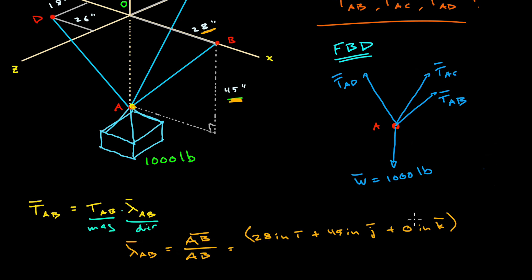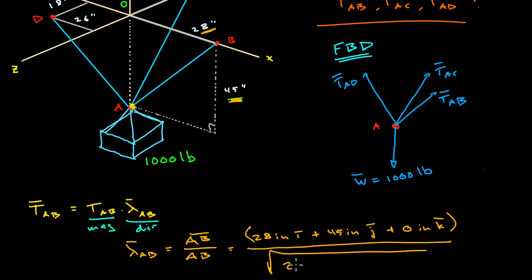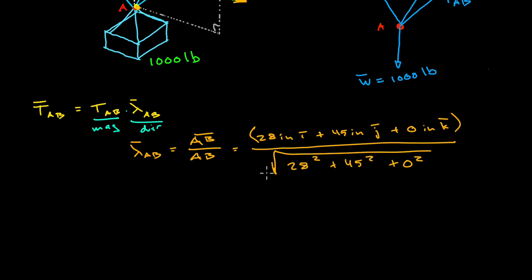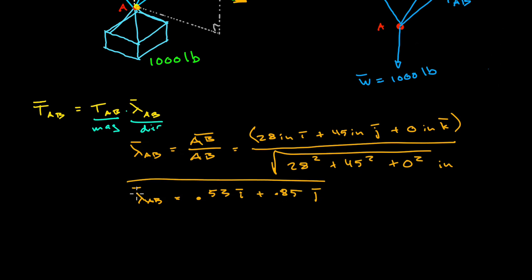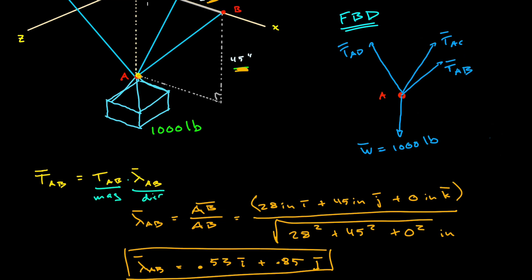This whole thing is the vector that takes you from point A to point B. Again, this does not have unit length, which means we've got to normalize by dividing by the magnitude — the three-dimensional Pythagorean theorem. You take each component and plug it into the square root of the sum of the squares. The units of the denominator are also in inches, so inches in the numerator cancel with inches in the denominator, and therefore lambda is a unitless unit vector. Crunching through the numbers, lambda AB works out to this vector here — the unit vector that points from A to B.